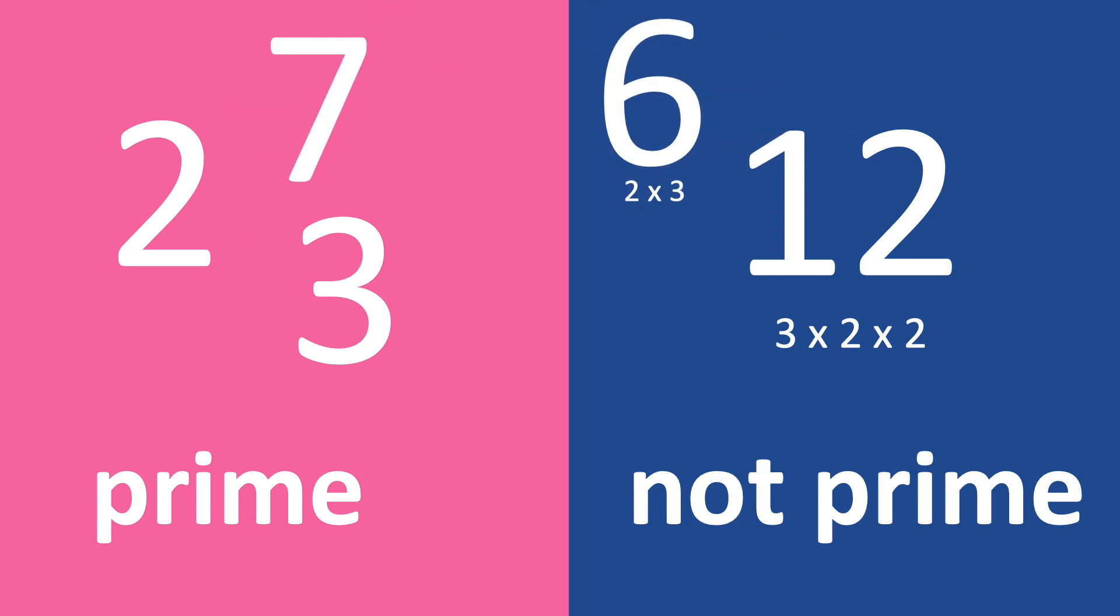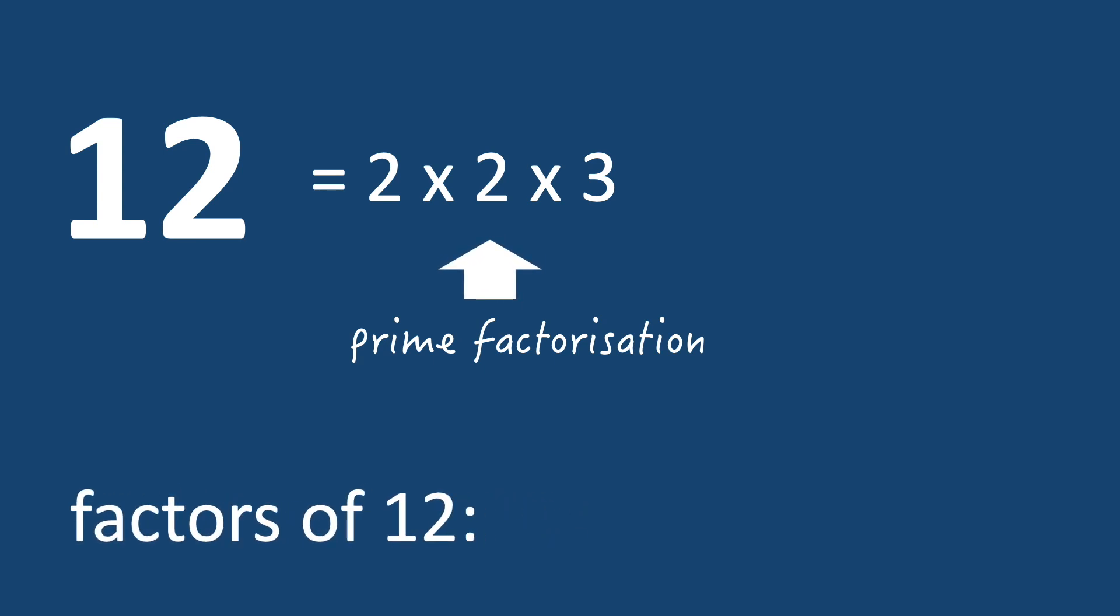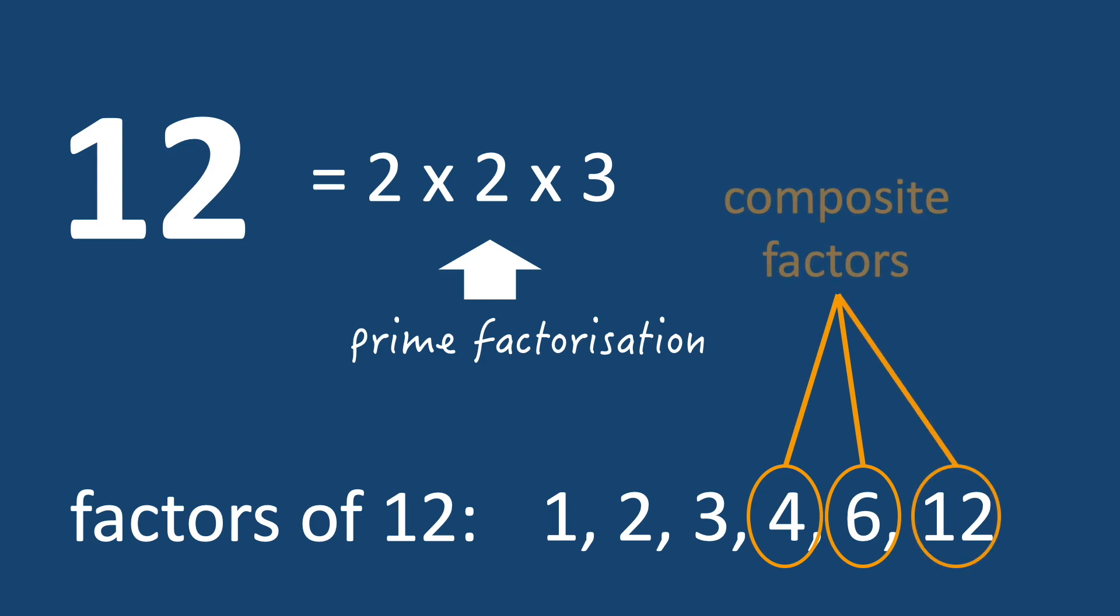So 7 is prime, 6 is not, 8 is not, and 13 is. Numbers that can be expressed as a product of primes are called composite numbers, and this decomposition of a number into this product is called its prime factorisation. So as well as referring to numbers as either prime or composite, we can also describe a number's factors as being either prime factors, if they are included in the prime factorisation, or composite factors.